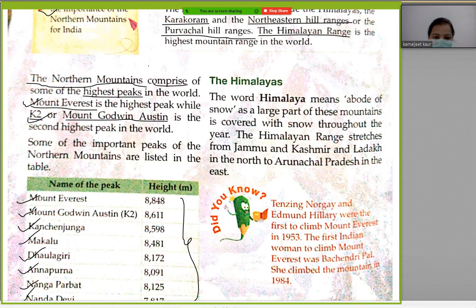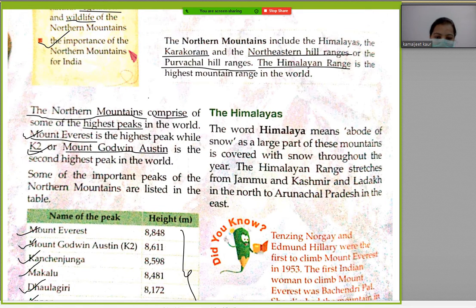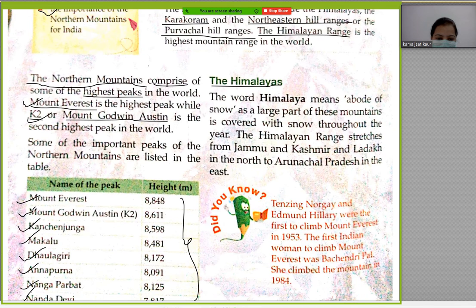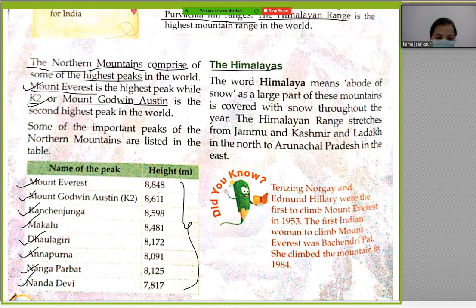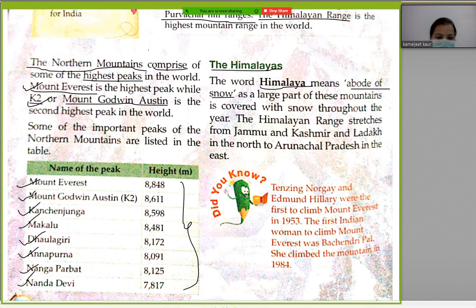The first important point is the Himalayas. The word 'Himalaya' means abode of snow — abode means home or house. So we call the Himalayas the home of snow, as a large part of this mountain is covered with snow throughout the year.